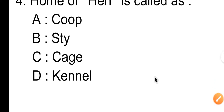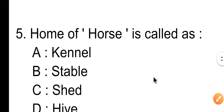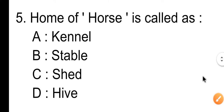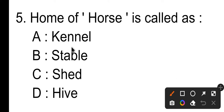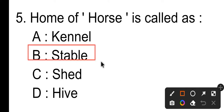Question number five: — Option A is kennel, Option B is stable, Option C is shape, Option D is hip. Option B is the correct answer. Here is the next question.